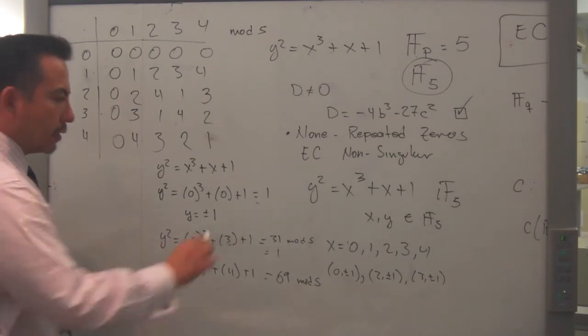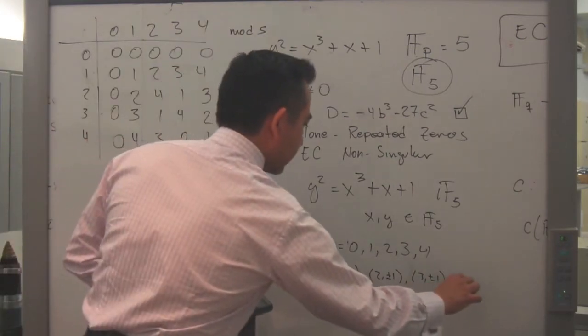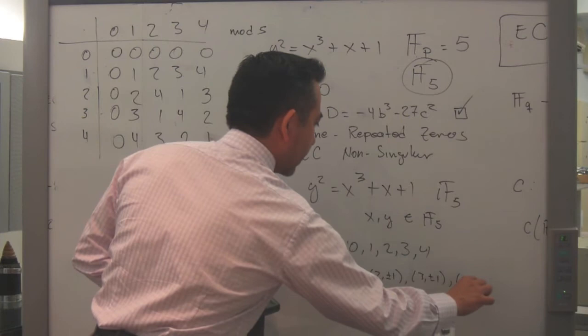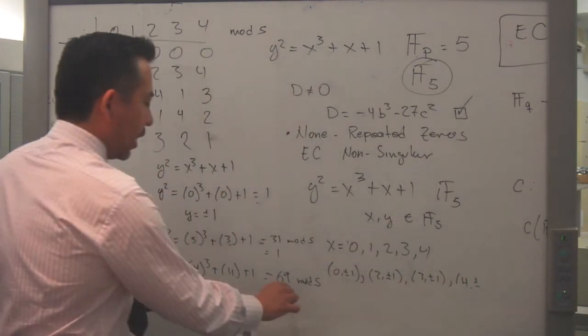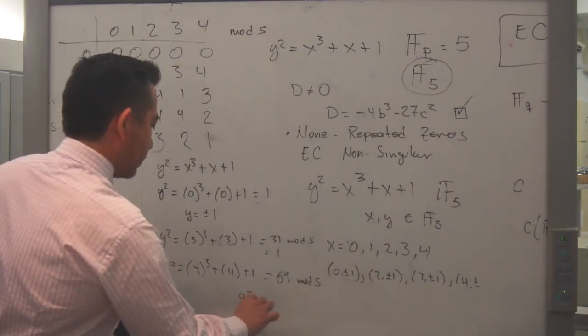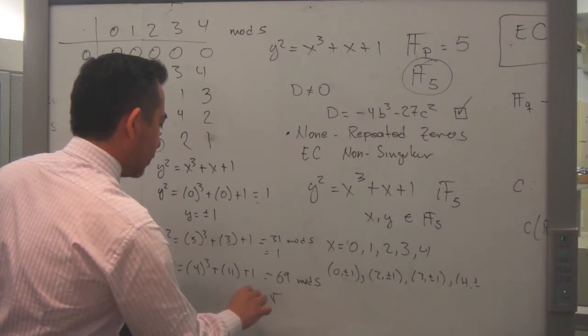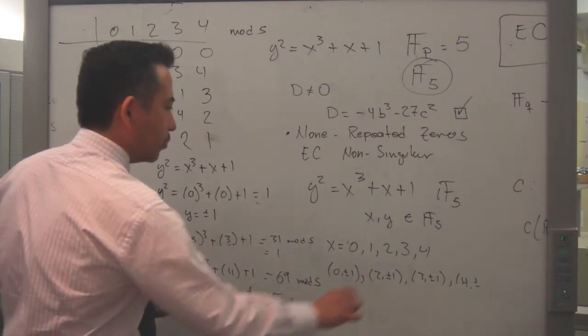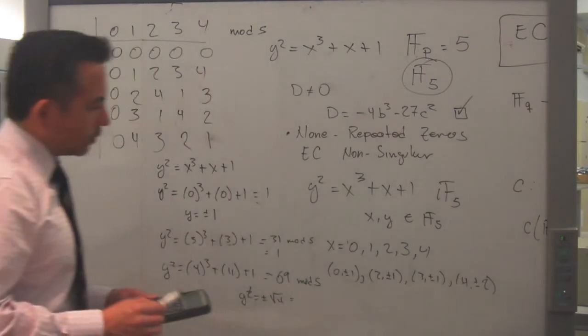So that means that for 4 I have 4 comma plus and minus square root of 4 is equal to 2, plus and minus square root of 2.